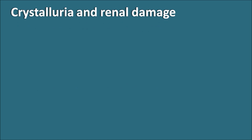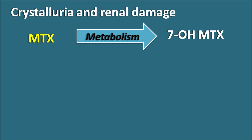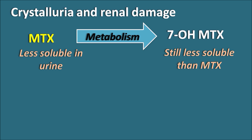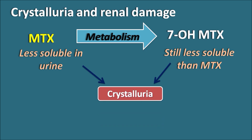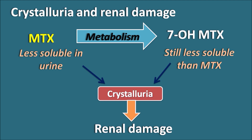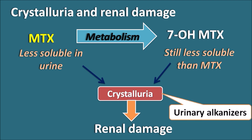Crystalluria and renal damage can be caused by methotrexate. Methotrexate is converted to its metabolite 7-hydroxy-methotrexate, which is even less soluble in urine than methotrexate itself. Both methotrexate and its metabolite are poorly soluble and can precipitate crystalluria — crystal formation in the urine — which, if untreated, may cause renal damage with long-term treatment. To prevent crystalluria, patients should drink large amounts of water, and urinary alkalinizers like sodium citrate can also be used to dissolve the crystals.